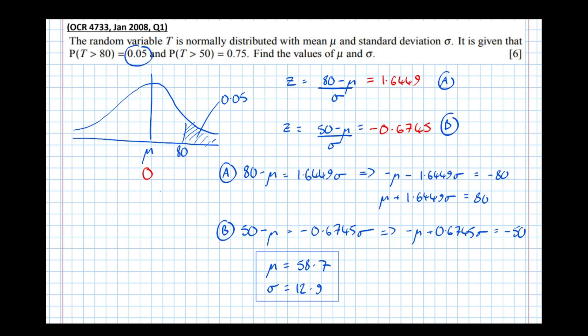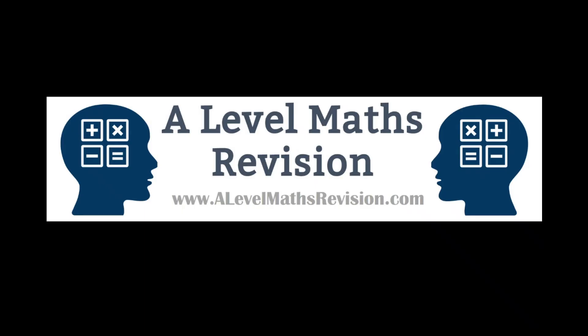So that's how you do this. If asked to find the mean and standard deviation of an unknown normal distribution, find the z values two different ways and solve the equations simultaneously. For more worked exam questions like this, go to alevelmathsrevision.com and subscribe to our YouTube channel.